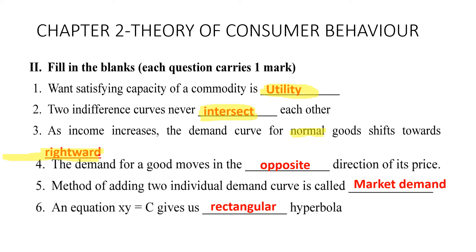Fourth: the demand for a good moves in the inverse direction of its price — you can write inverse or opposite direction.